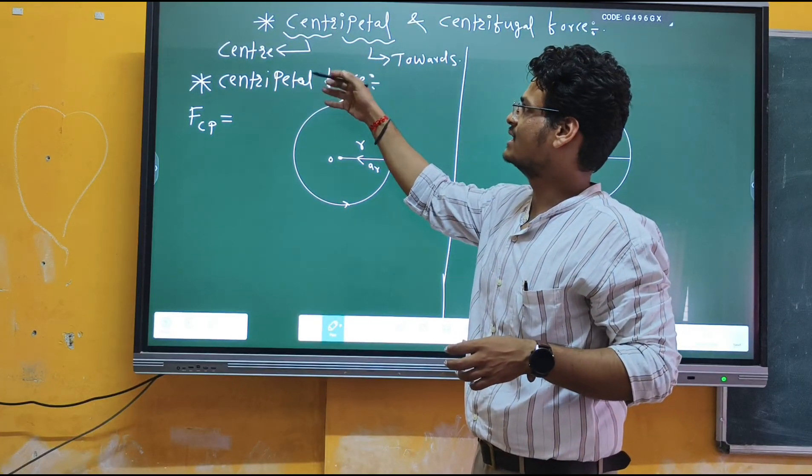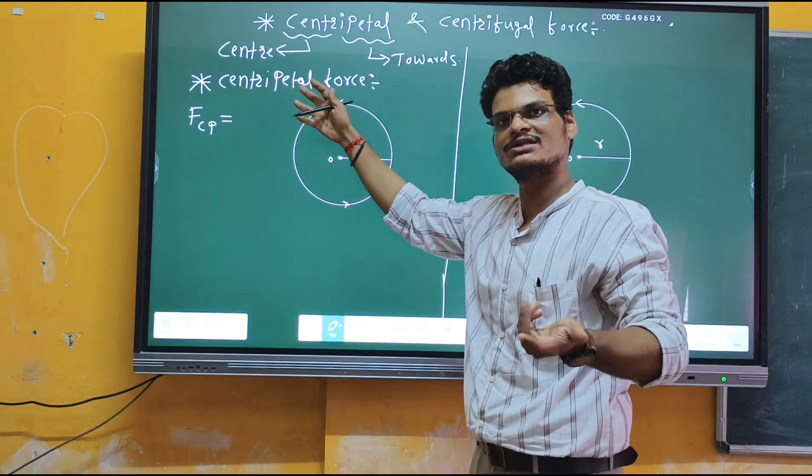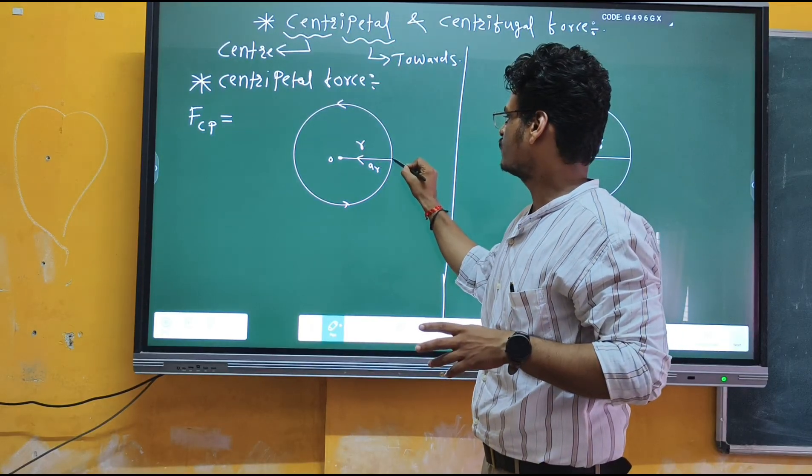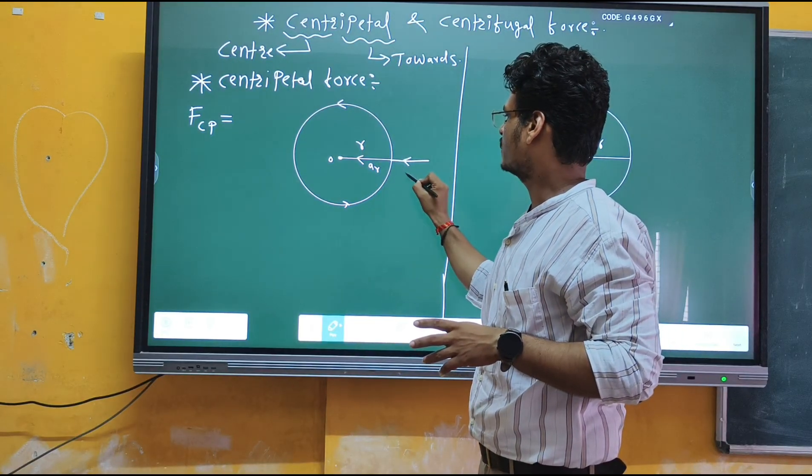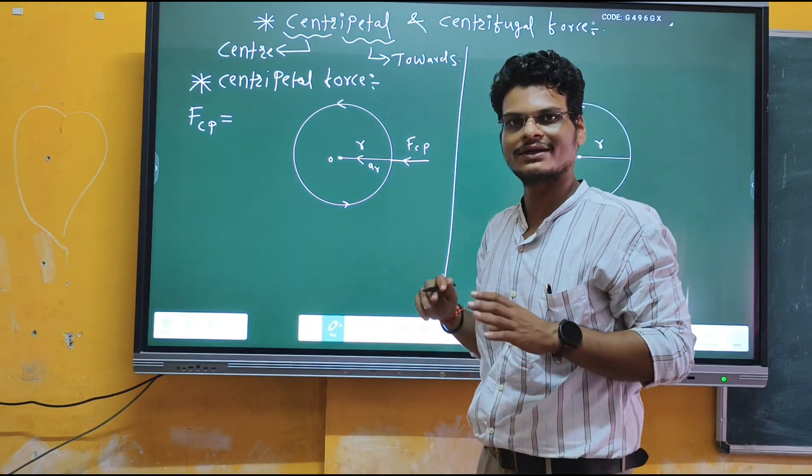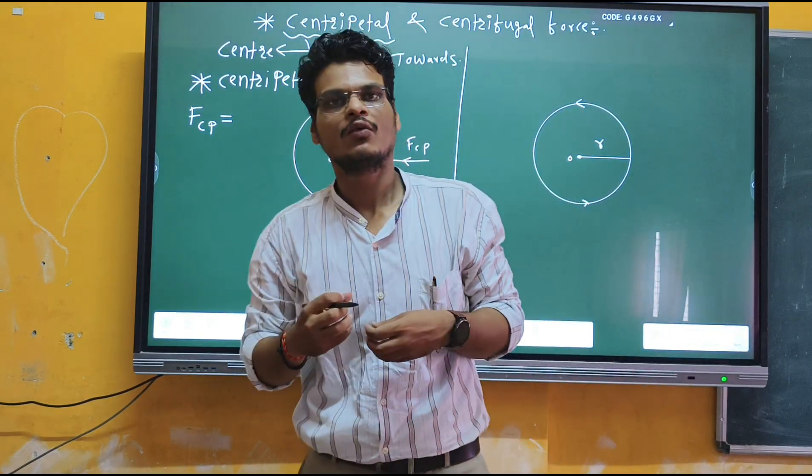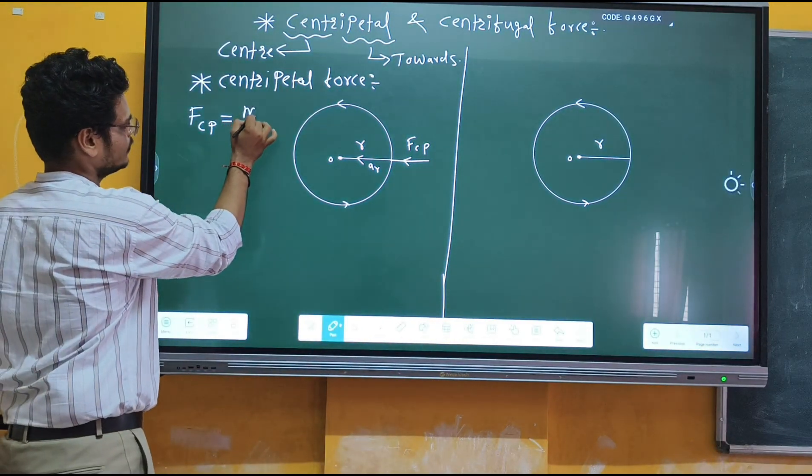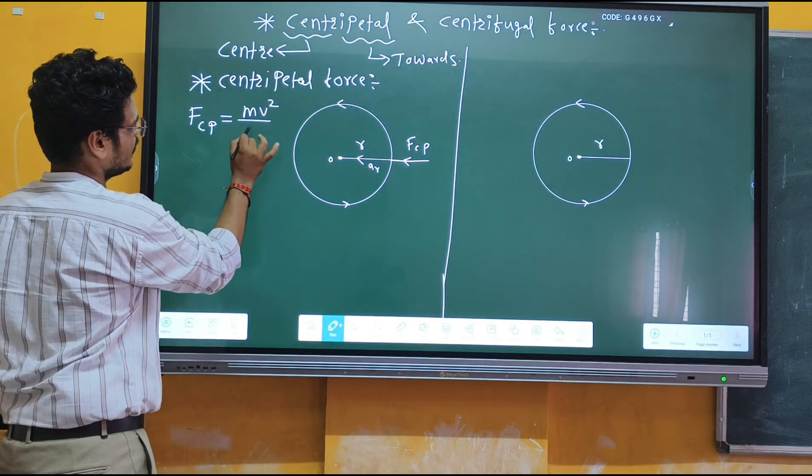As we discussed earlier, centripetal means towards the center. This force acting towards the center of the circle is centripetal force. Now we have a formula for this centripetal force: F_cp = MV²/R.